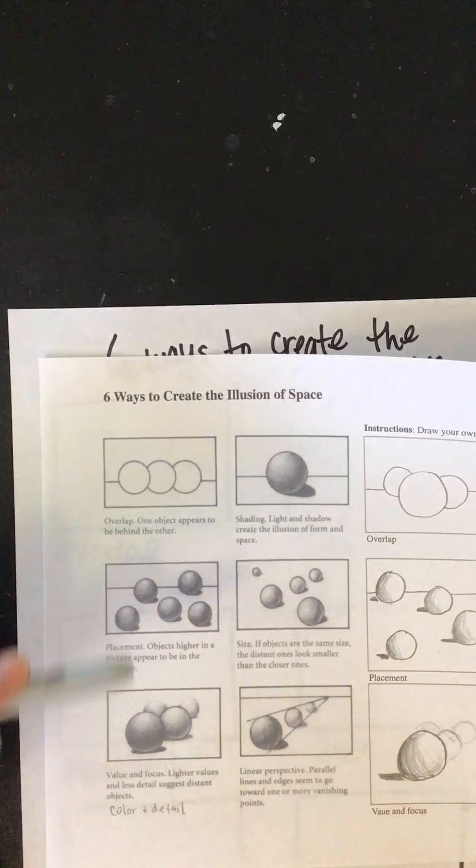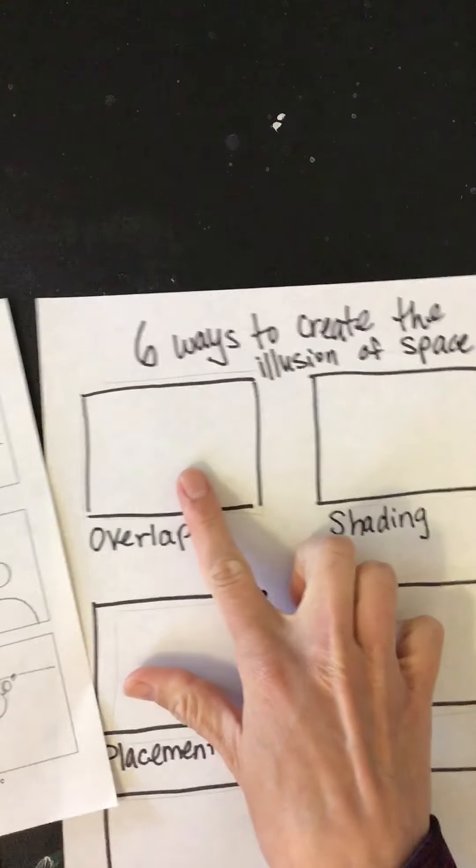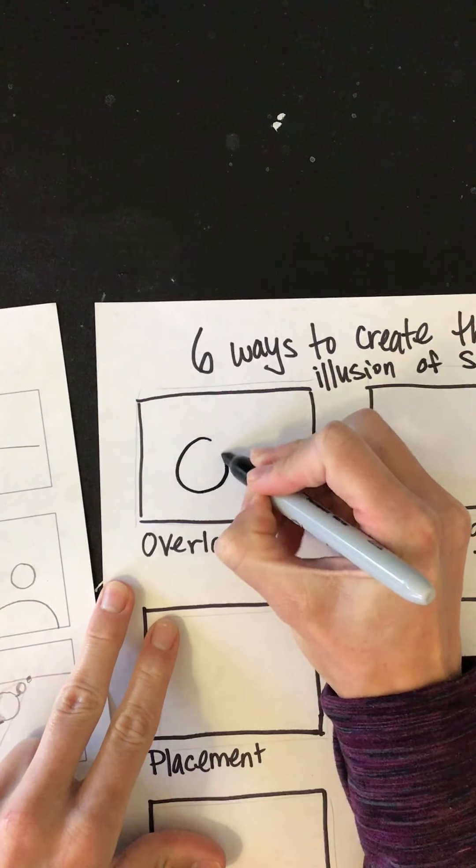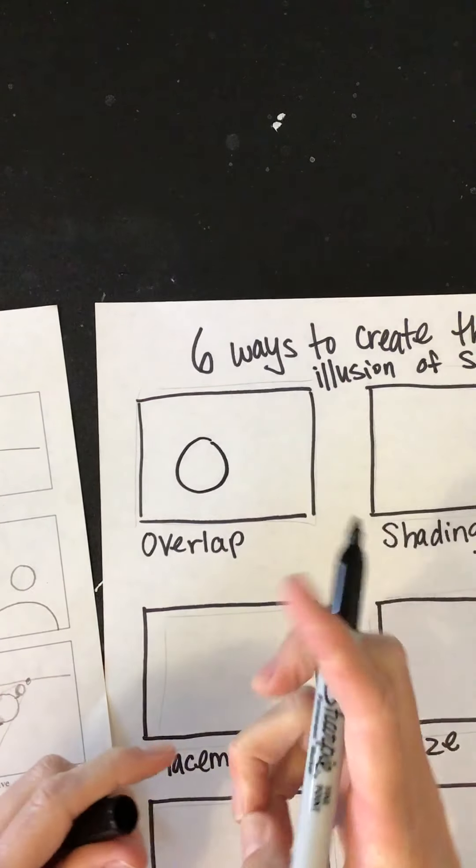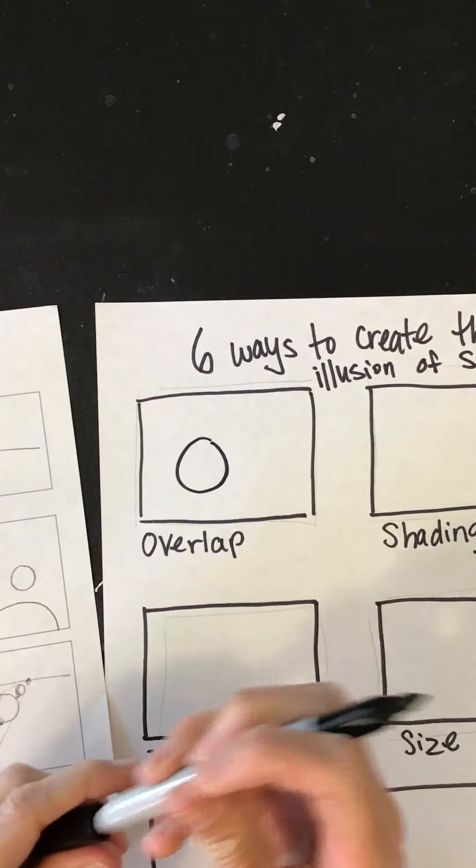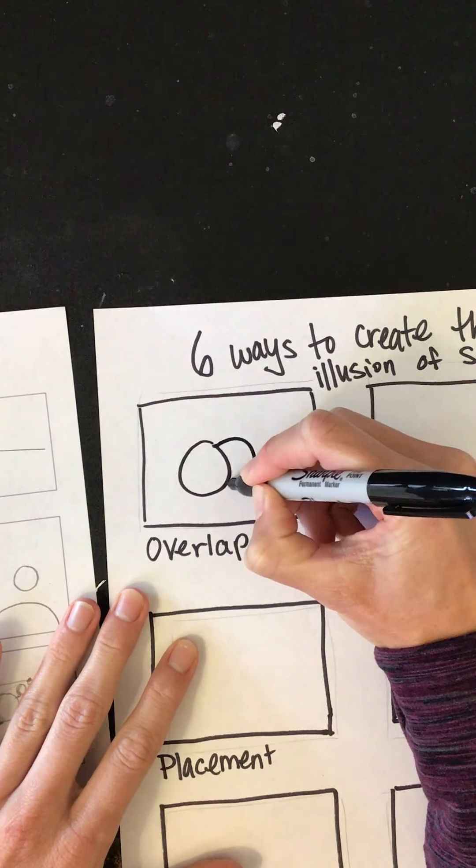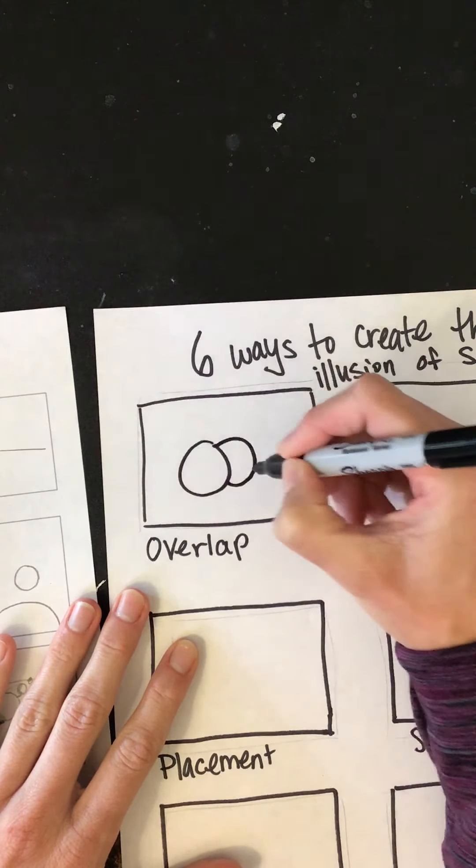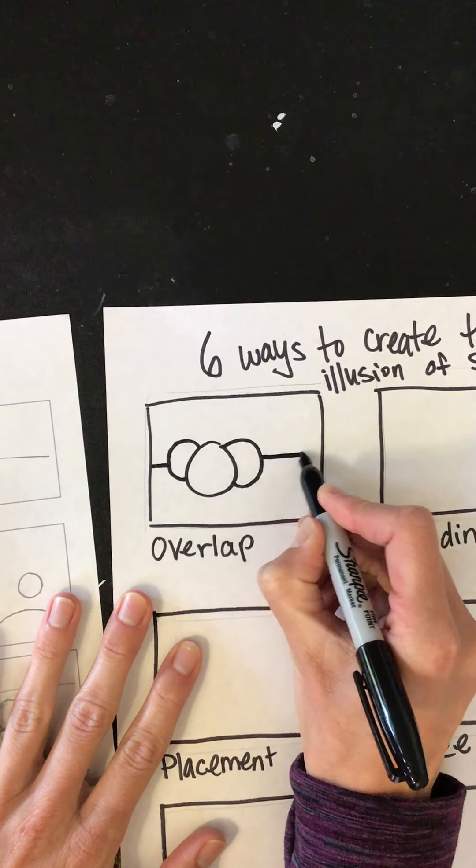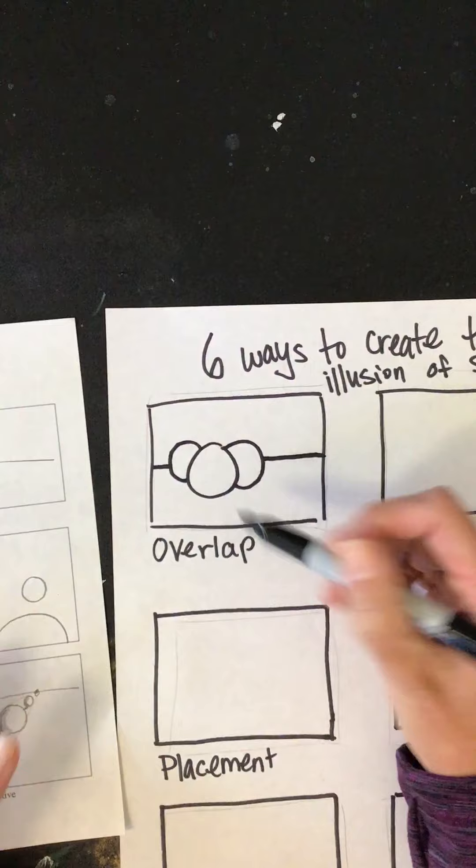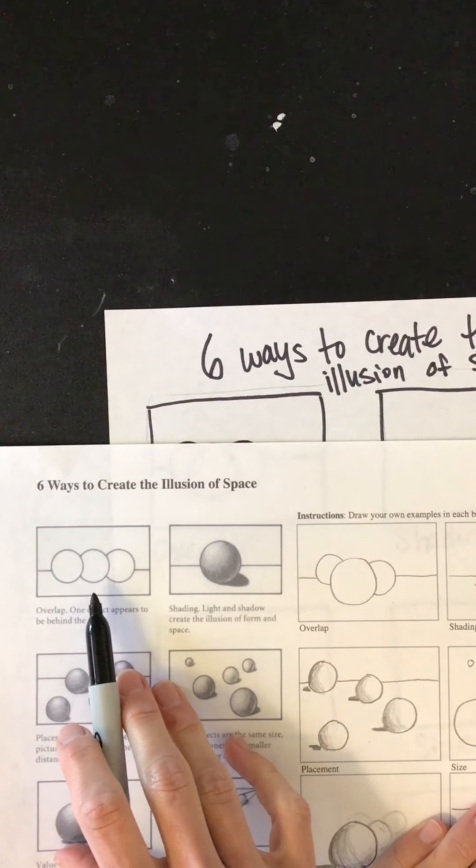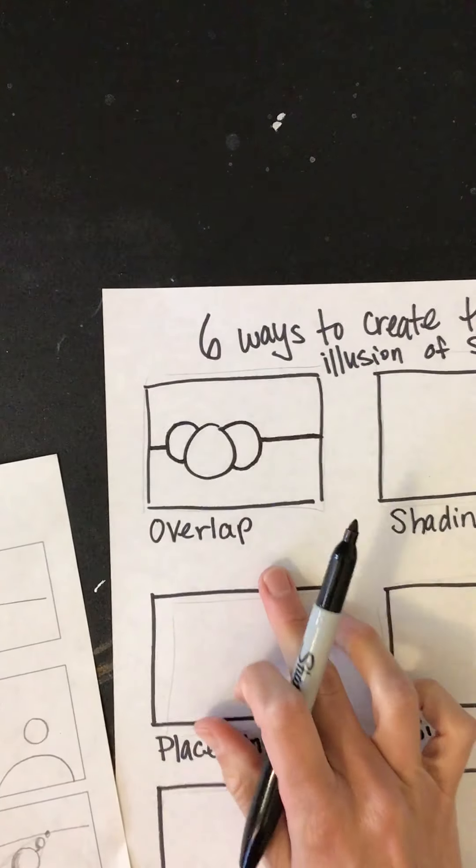So overlap. Overlap is one object appears to be behind the other. So the way you want to do this one, you're gonna start with just drawing a circle, wherever you want on your paper. You can also do other shapes if you're into that. You do not have to do circles. After you draw that one circle, go ahead and draw at least two more behind it. So they can be next to it. I'm gonna go ahead and I like putting one here, maybe one there. And then I'm gonna draw the horizon line behind it to give it the illusion that they're like on say a counter, and maybe they're my oranges or something, right? So that's overlap. You could also draw it like this in the example that I have on our assignment. So that's overlap.